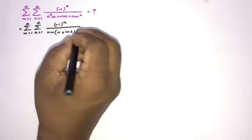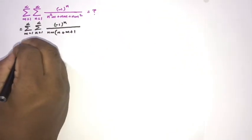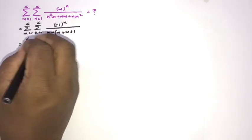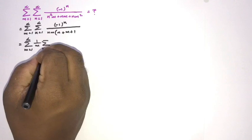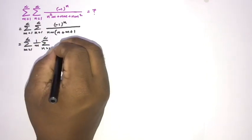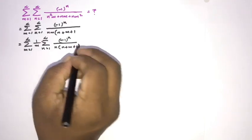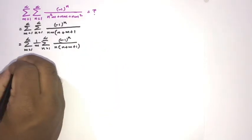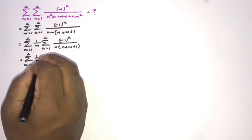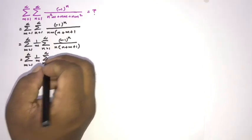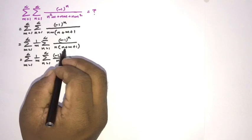We separate the sum over m from 1 to infinity, writing 1/m out front, multiplied by the sum over n from 1 to infinity of (-1)^n divided by n(n + m + 1).